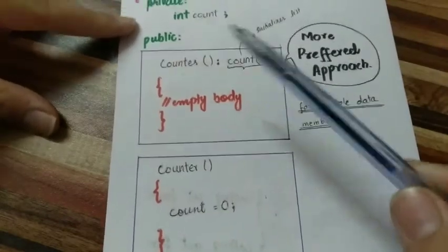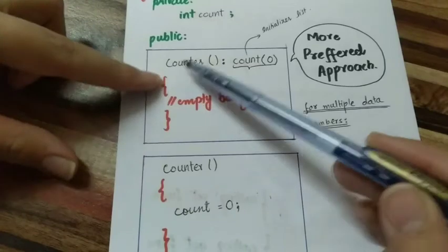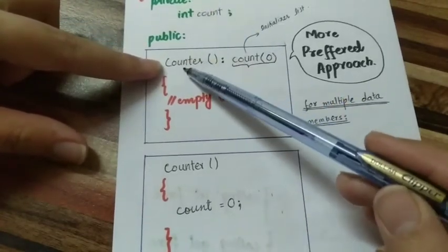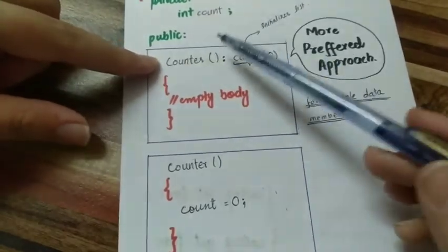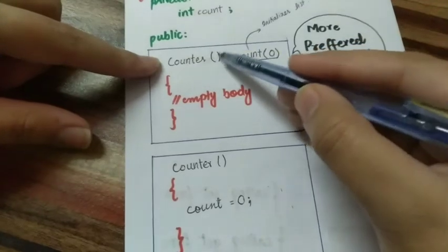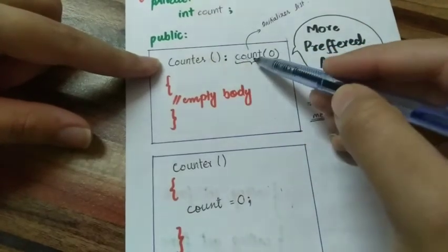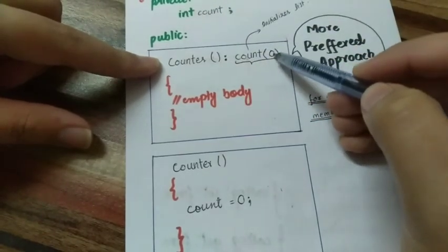If you look at the counter, the constructor name is the same as the class name. The return type doesn't exist. You can use arguments. Then you add a colon, then you add a data member like count. Then count and arguments in brackets.